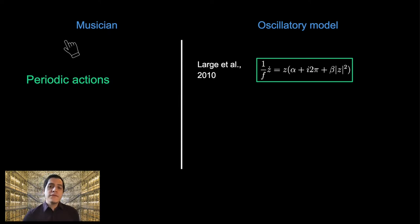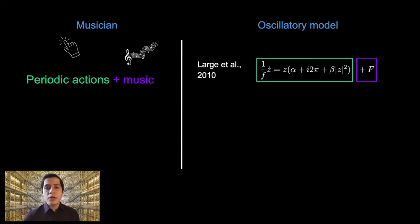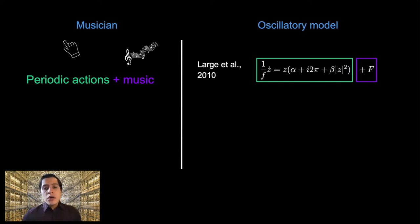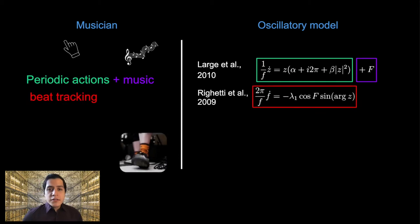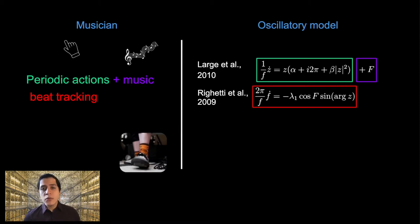Also, individuals can follow the beat of almost any music, being fast or slow, so to simulate this, our model listens to an external stimulus here represented by big F. We added a frequency learning mechanism to allow the oscillator to adaptively synchronize to an external stimulus frequency. Here lambda 1 is the learning rate, which controls how fast the oscillator learns frequency from a stimulus.